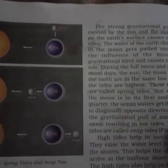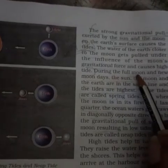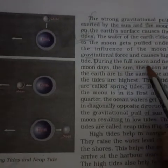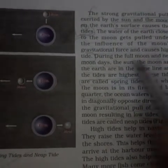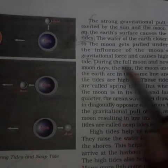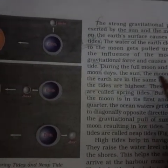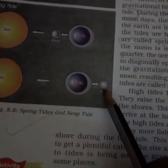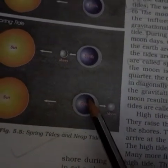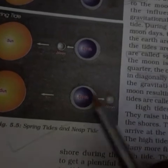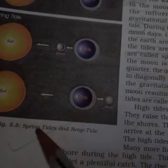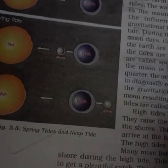During a full moon or new moon, the sun, the moon, and the earth are in the same line. In this alignment, we get what are called spring tides. In spring tides, the tides that occur are the highest tides on the ocean surface.